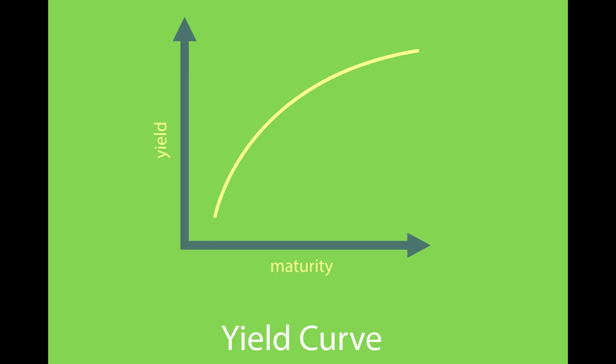Now first, a little refresher on what the yield curve is and what an inverted yield curve means. I've included chapters down below if you want to skip this part. The yield curve is a graph that shows you the interest rate on a debt instrument versus the duration of maturity of that instrument. For example, a three-month bond will yield this much interest, a six-month bond this much, a ten-year bond even more.